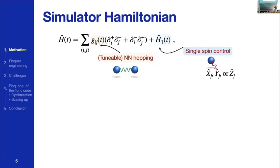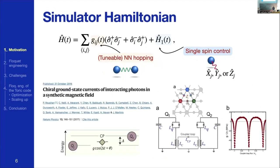This talk will be about finding a smart way to quantum simulate such Hamiltonians. To have a concrete setup in mind, I will work with a simulator Hamiltonian consisting of a nearest-neighbor hopping term and single-spin control. I will also work with tunable coupling, which of course is not always available. As a concrete physical system, I'll reference a Google experiment from a few years ago where they used oscillations of two-body couplings to realize artificial gauge fields.